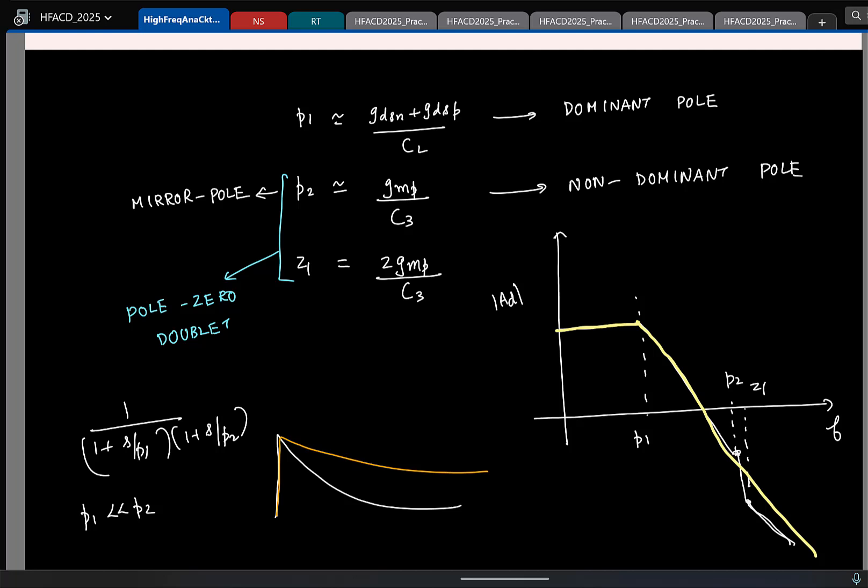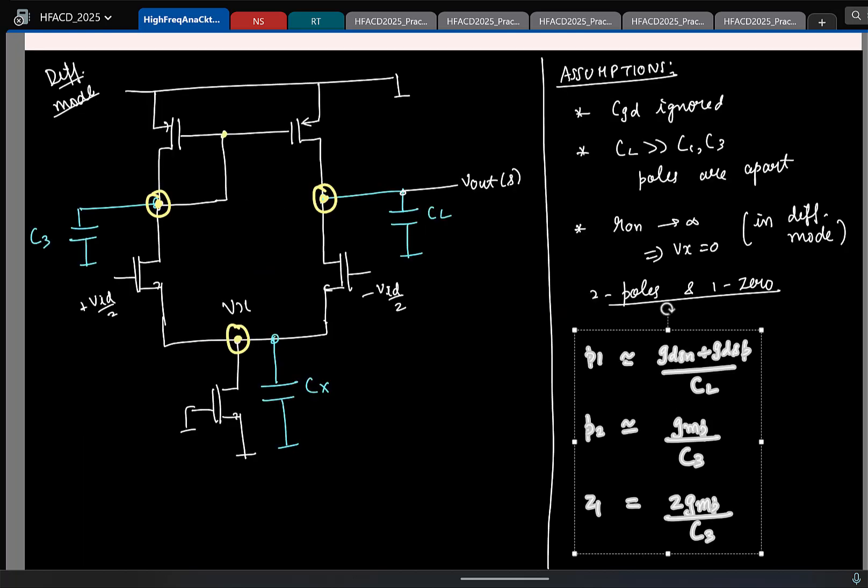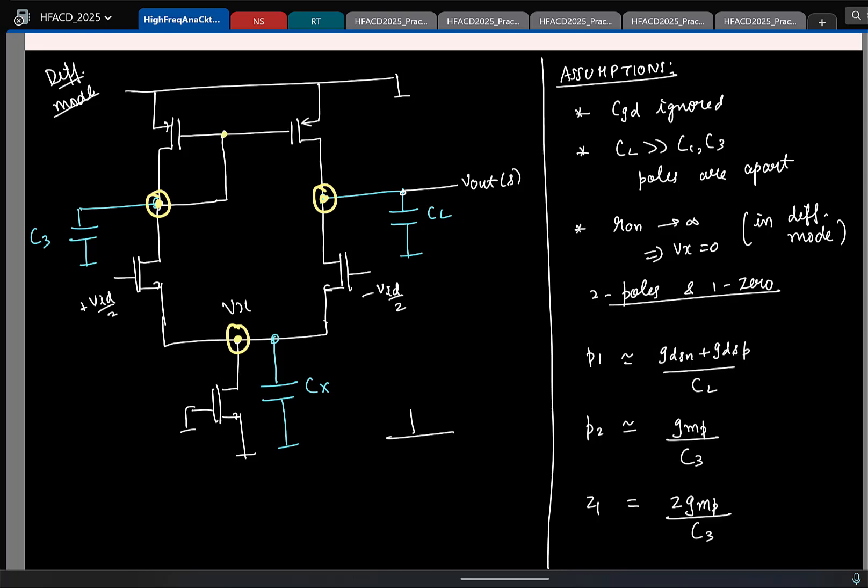Sir, the pole and zero that are being cancelled are to the left half? Yeah, everything will be left half of S plane. I mean, see if a pole is in the right half of S plane, the circuit to start with is unstable. I mean, typically, I remember that it is 1 by RC. So, only if R is negative, we can have the pole to be in the RHP. Pole and zero that can't be in the right half of S plane.